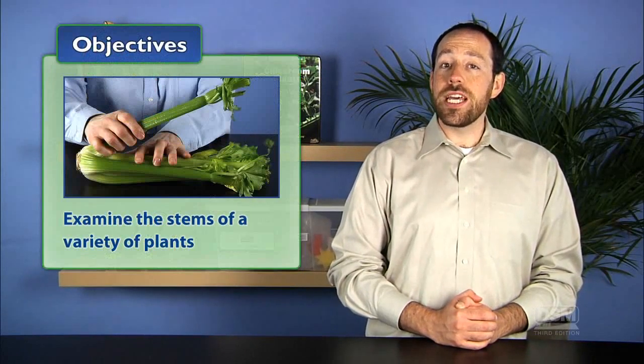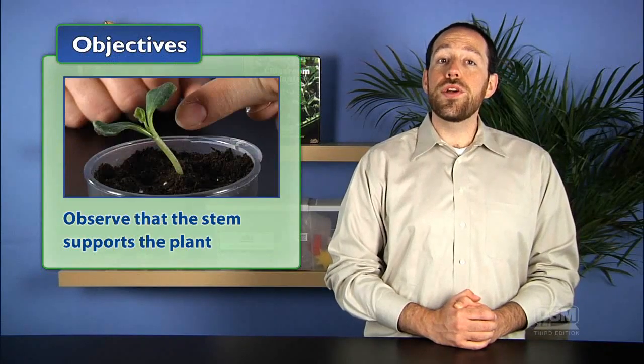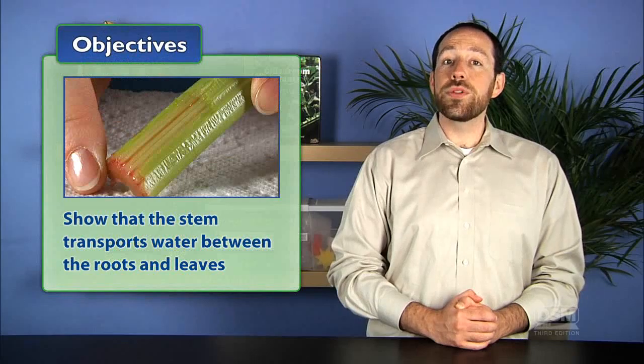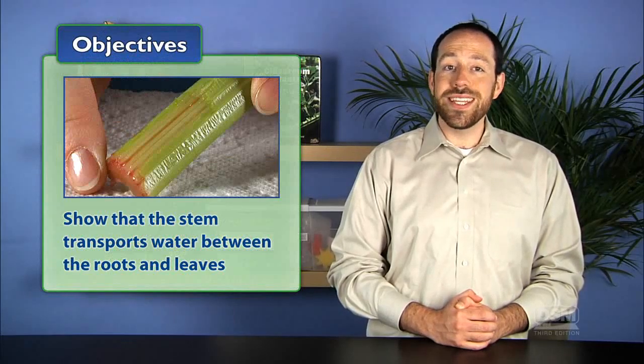Students first examine the stems of a variety of plants and observe that the stem supports the plant. Then they use celery to show that the stem transports water between the roots and the leaves.